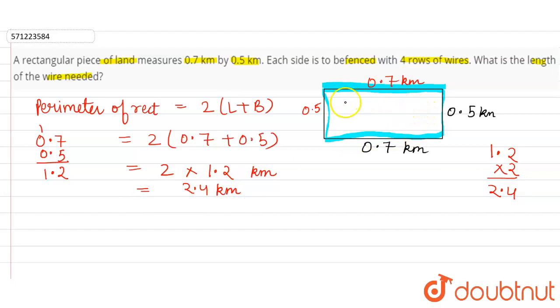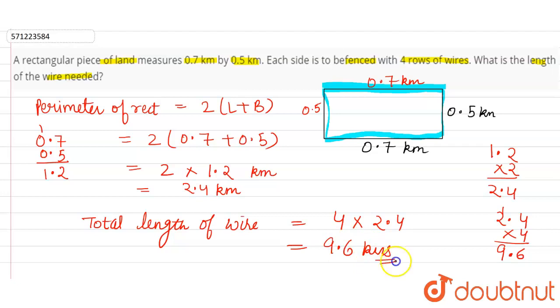But we have to fence this rectangle four times. So total length of wire will be 4 into 2.4. Now let's multiply 2.4 into 4: 4 into 4 is 16 and 4 into 2 is 8, 1 carry, equals 9.6. The decimal will come before the 10th place. So 9.6 kilometers is the total length of the wire required to be fenced with four rows of wire.